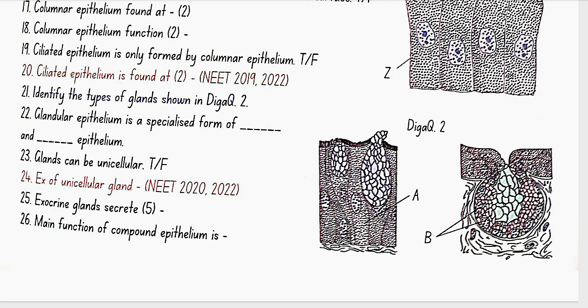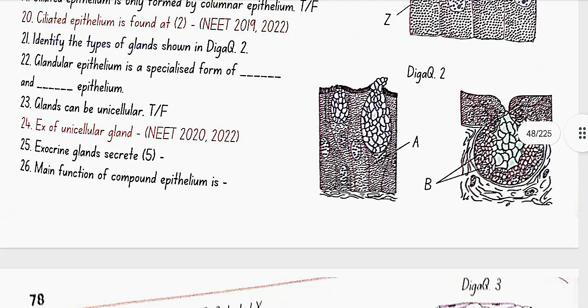Glandular epithelium is a specialized form of cuboidal and columnar epithelium. Glands can be unicellular. Yes, this is true. Example of a unicellular gland is goblet gland. Exocrine glands secrete mucus, saliva, earwax, milk, oil, digestive enzymes.